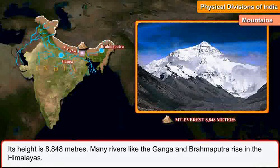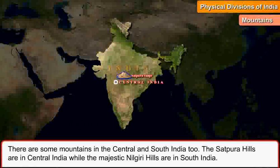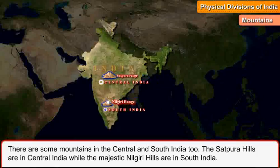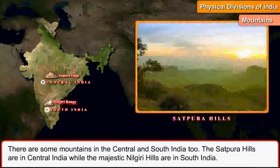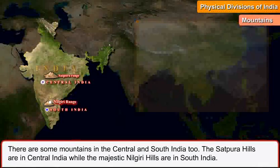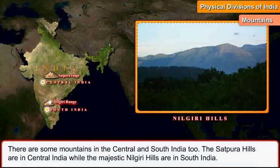Many rivers like the Ganga and Brahmaputra rise in the Himalayas. There are some mountains in central and south India too. The Satpura hills are in central India, while the majestic Nilgiri hills are in south India.